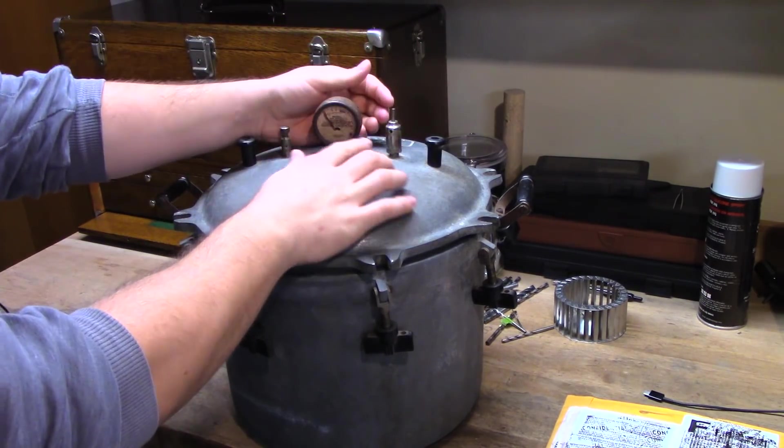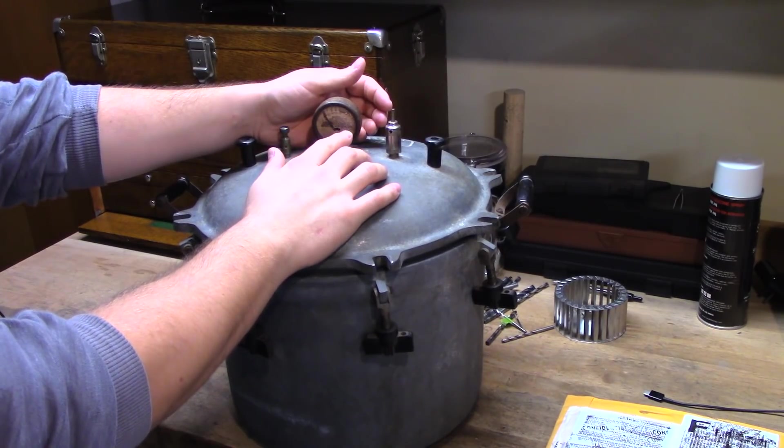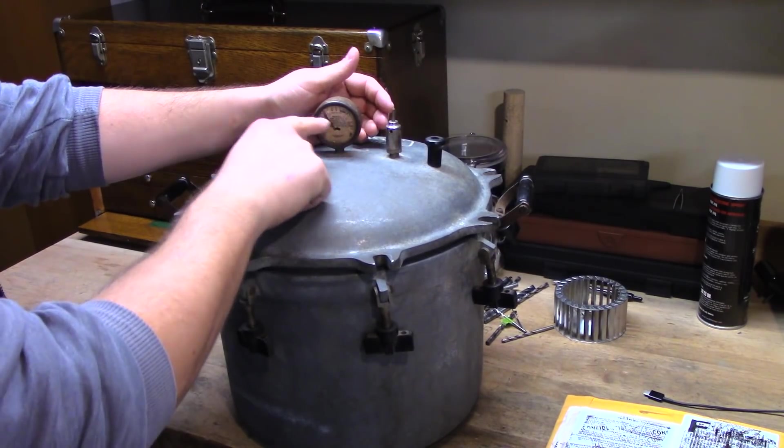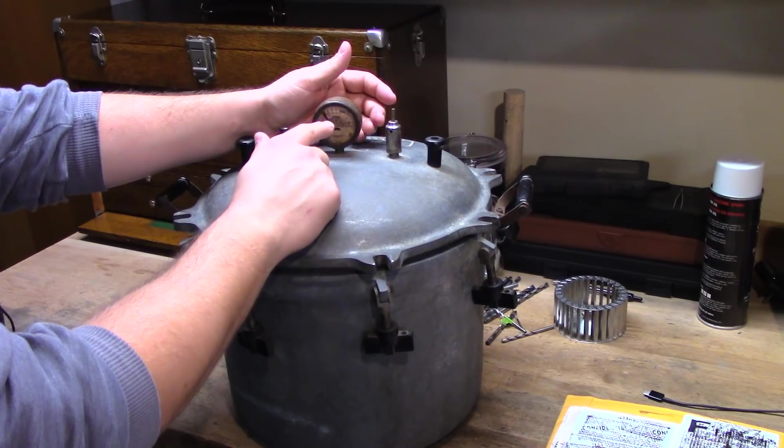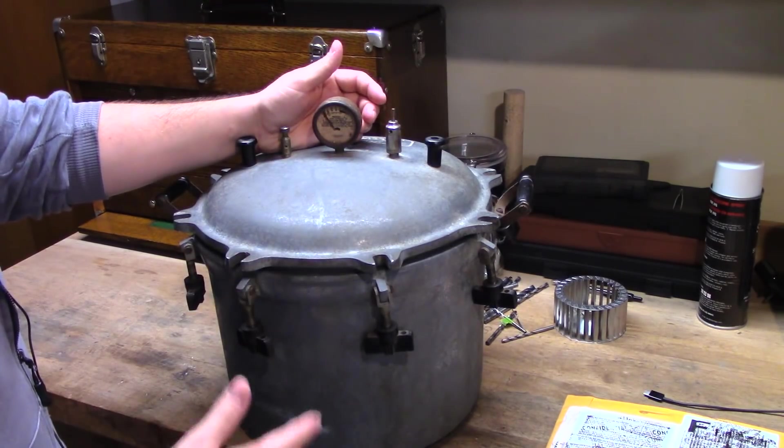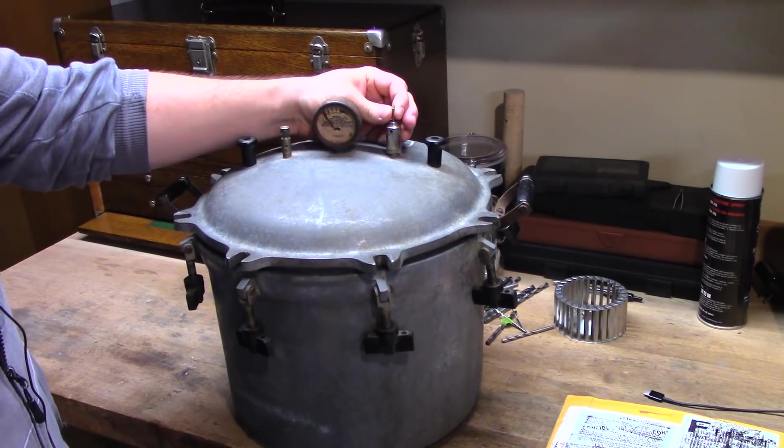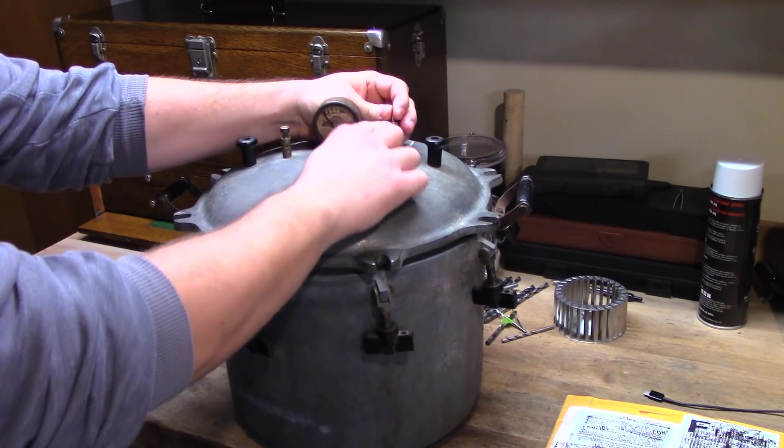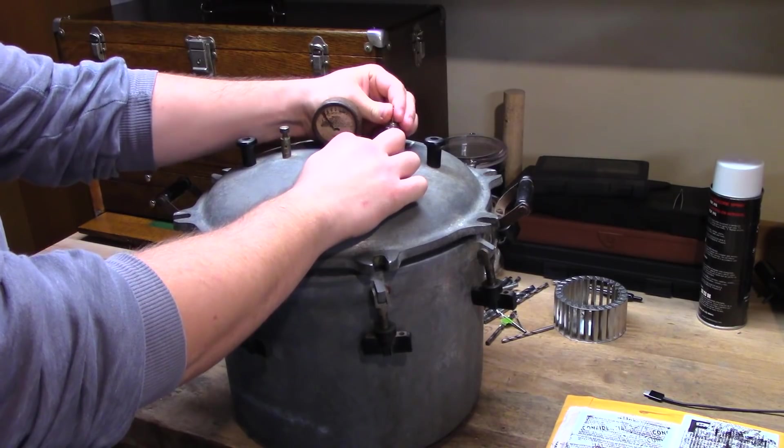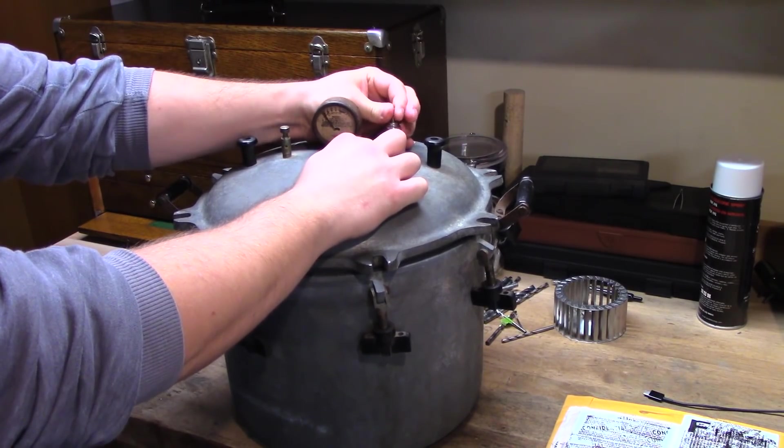Nice thing is, the dial still works perfectly fine. It's a little sketchy, trusting a dial that old, but I have pressure tested it, and it was within a couple PSI of both the gauges I tested it with. Other nice thing is, the emergency valve does work. That pops at about 25 PSI, I think it was.